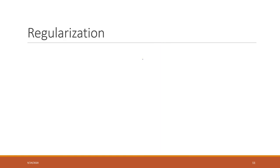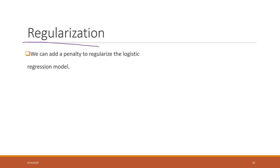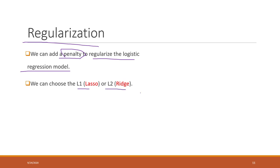For most machine learning models, we can perform regularization to make the model less complicated and reduce overfitting. For logistic regression, we can add penalties. We can use L1 (Lasso) or L2 (Ridge). Ridge tends to minimize the sum of squares of all coefficients, and Lasso tends to put less important coefficients to zero.